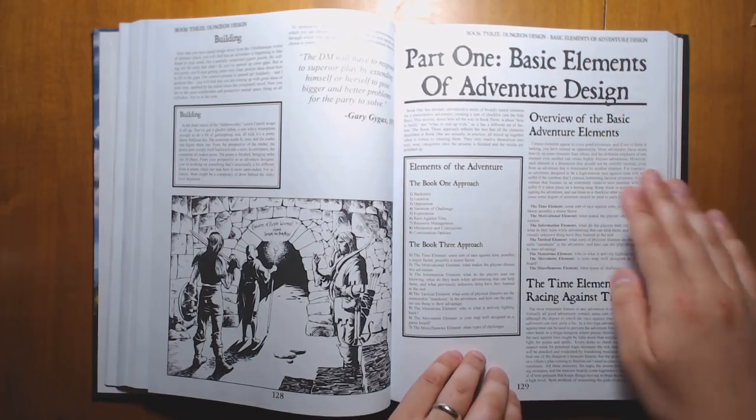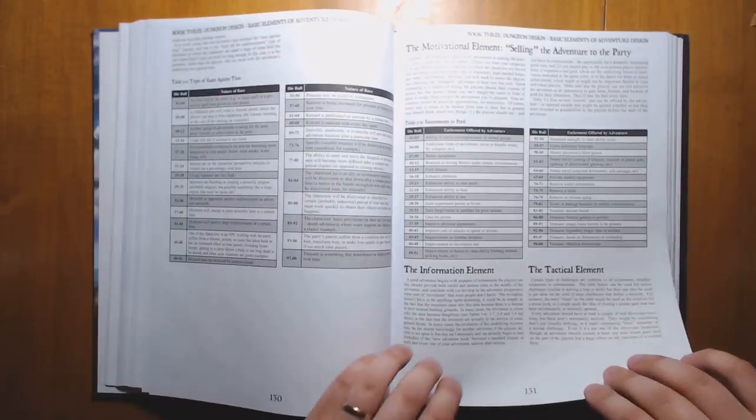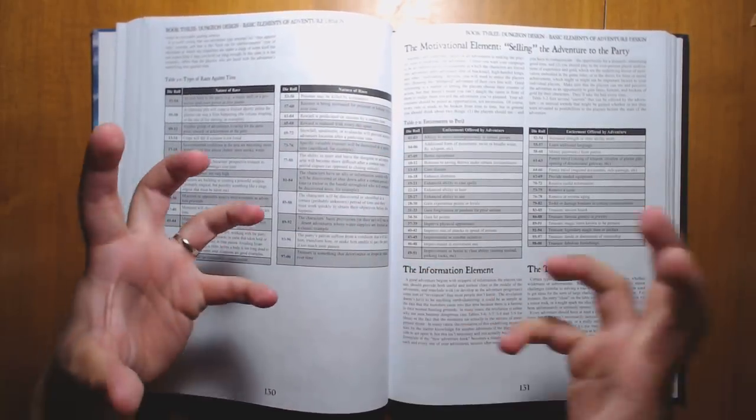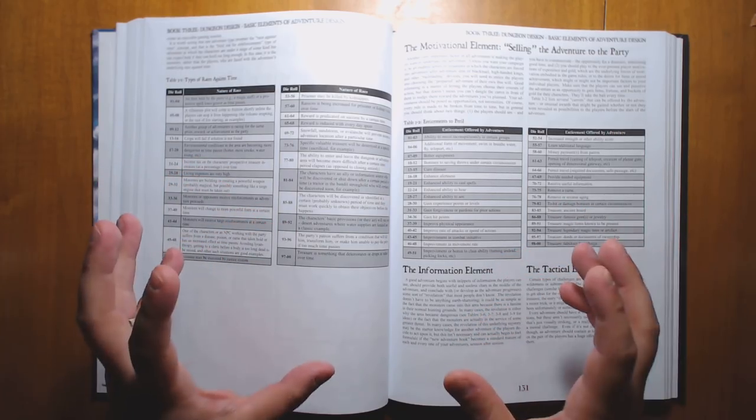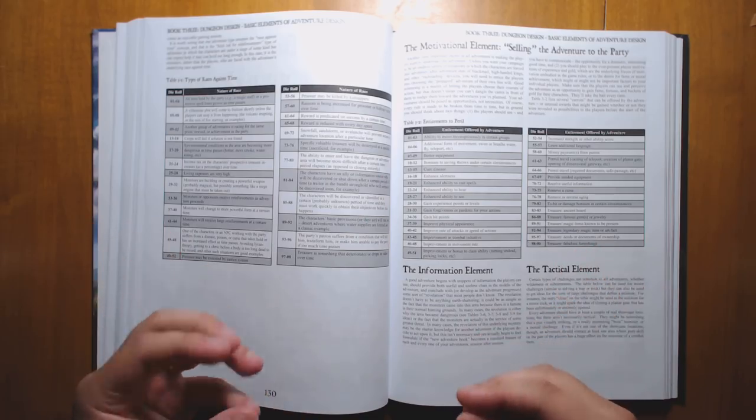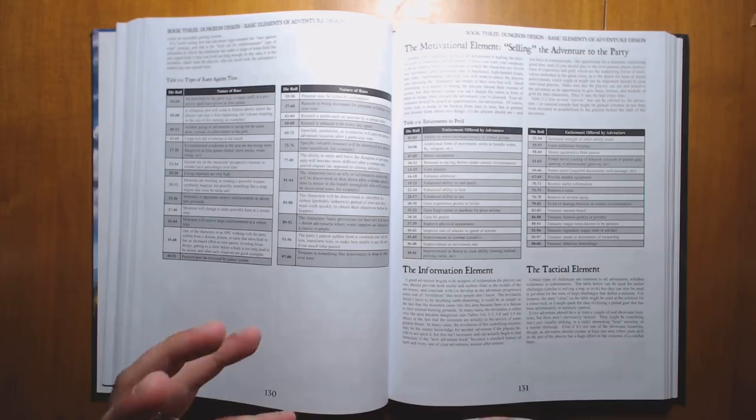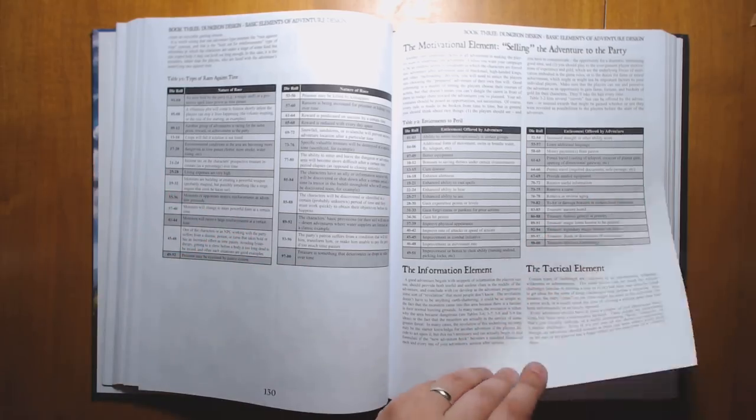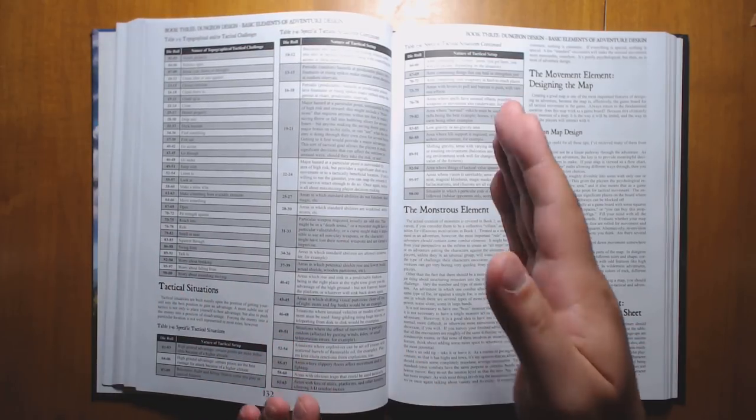And he breaks it down into all sorts of principles and then gets into the details. Races against time. So here's types of races against time. Any kind of time pressure that you're going to put on the players is going to make everything feel more urgent and is going to constrain their choices in a really great way. They're not just going to be sitting around waiting for something interesting to happen. They're going to have to take action themselves.